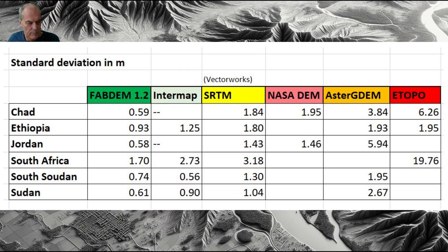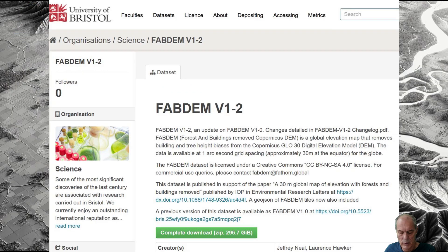Following FAB DEM is Intermap, but as I said, Intermap is a paid elevation model so we don't really consider it because most of our colleagues are not going to be able to pay for the subscription. Then we have SRTM, and below that ASTER GDEM and ETOPO.